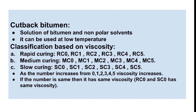The classification of cutback bitumen is based on viscosity: rapid curing (RC), medium curing (MC), and slow curing (SC). Cutback bitumen is classified from 0 to 5 — as the number increases, viscosity increases. If the number is the same across types, viscosity is the same; for example, RC0 and SC0 have the same viscosity. If we compare RC0 and SC2, SC2 has more viscosity than RC0. As viscosity increases, fluidity of the cutback decreases.